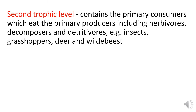The second trophic level contains the primary consumers, which eat the primary producers, including herbivores, decomposers, and detritivores. Examples include insects, grasshoppers, deer, and wildebeest.